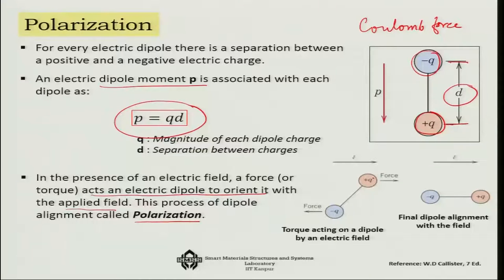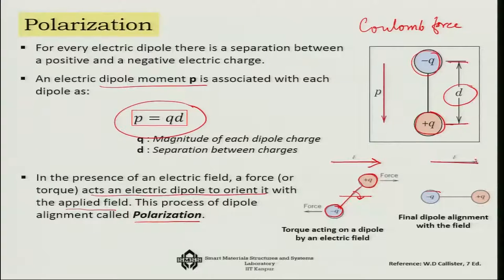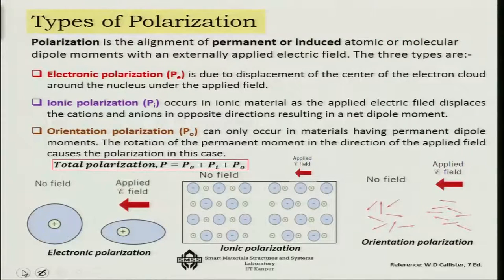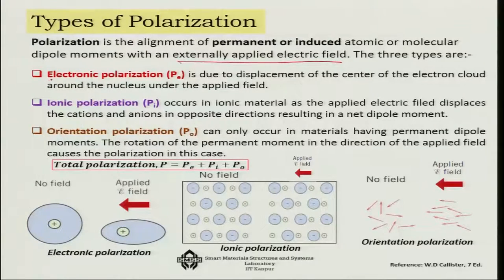For example, charges +q and -q interact and when subjected to an external electric field, that field reorients them in its direction — this activity is called polarization. There are several types of polarization, involving alignment of permanent or induced atomic or molecular dipole moments with an externally applied electric field. The first type is electronic polarization (pₑ), which is due to the displacement of the center of the electron cloud around the nucleus under the applied field.